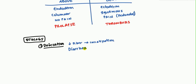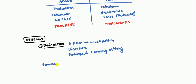Believe it or not, prolonged lavatory sitting — such as spending hours reading on the toilet — can block flow around the anal canal and cause hemorrhoids. Trauma and age can also lead to hemorrhoids, as support structures weaken over time. Besides defecation, there are secondary causes from other pathologies.